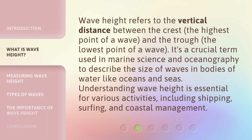Wave height refers to the vertical distance between the crest — the highest point of a wave — and the trough, the lowest point of a wave. It's a crucial term used in marine science and oceanography to describe the size of waves in bodies of water like oceans and seas. Understanding wave height is essential for various activities, including shipping, surfing, and coastal management.